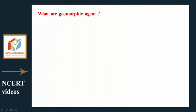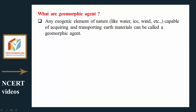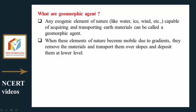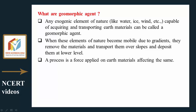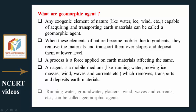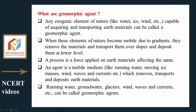Any exogenic element of nature like water, ice, or wind capable of acquiring and transporting earth materials can be called a geomorphic agent. When these elements become mobile due to gradients, they remove materials and transport them over slopes and deposit them at lower levels. An agent is a mobile medium — like running water, moving ice masses, wind, waves, and currents — which removes, transports, and deposits earth materials.